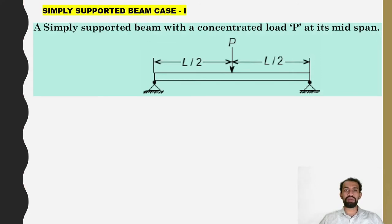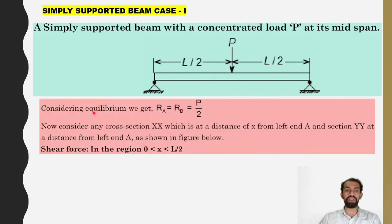Simply supported beam case number 1: a simply supported beam with a concentrated load P at its mid span, so P is acting at mid span L by 2. Here is point A and point B. Considering equilibrium, reaction at A and reaction at B will each be half of the load, meaning P by 2 will be acting at reaction A and P by 2 acting at reaction B.